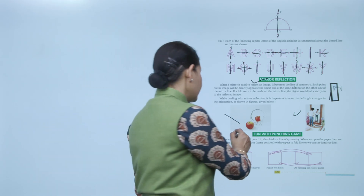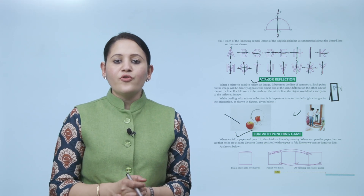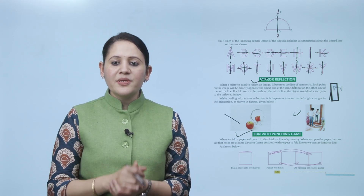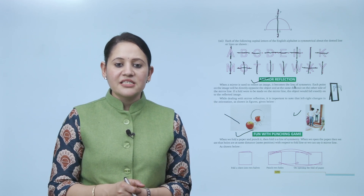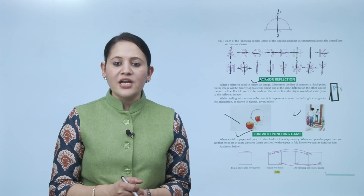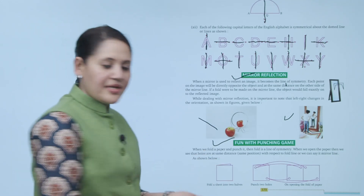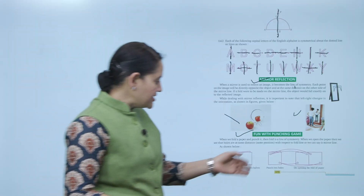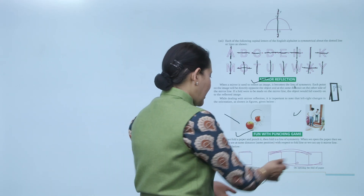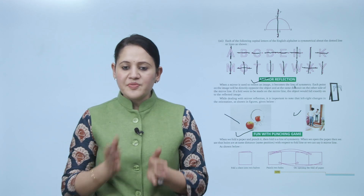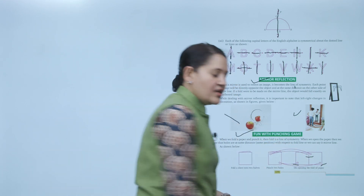Next is the fun with punching game. When we fold a paper and punch it, the fold is the line of symmetry. When we open the paper, we see the holes are at the same distance and same position with respect to the fold line — we can call it the mirror line. First we take a sheet of paper, fold it to two halves, and punch it. When we open the sheet, we see the holes at the same distance — two holes on each side.